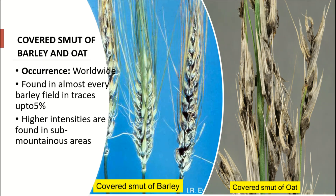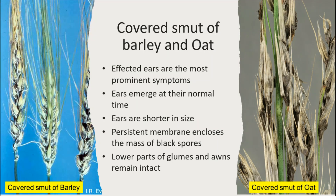The symptoms of covered smut of barley and oats — here this is oats and this is barley. The affected ears are the most prominent symptoms. Ears emerge at their normal time or they are shorter in size. There is a persistent membrane, as you can see here, that encloses the mass of black spores.